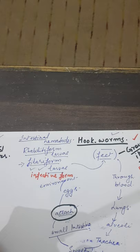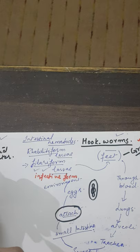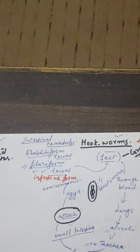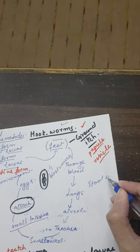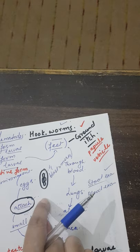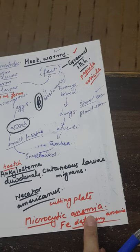An important point: the egg of Ancylostoma duodenale is a segmented ovum, usually containing four blastomeres. In the diagnosis written in a practical exam, under stool examination you write that on microscopy you see the characteristic eggs — a segmented ovum with four blastomeres. Blood examination will show microcytic anemia and iron deficiency anemia.